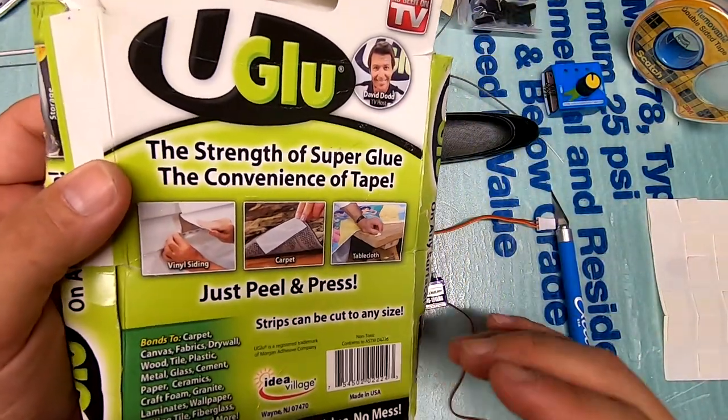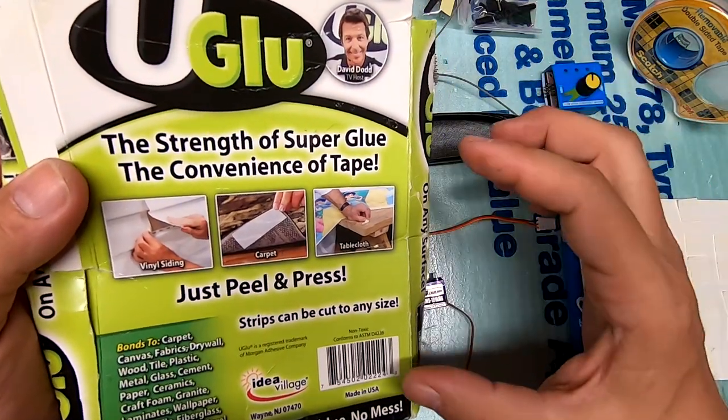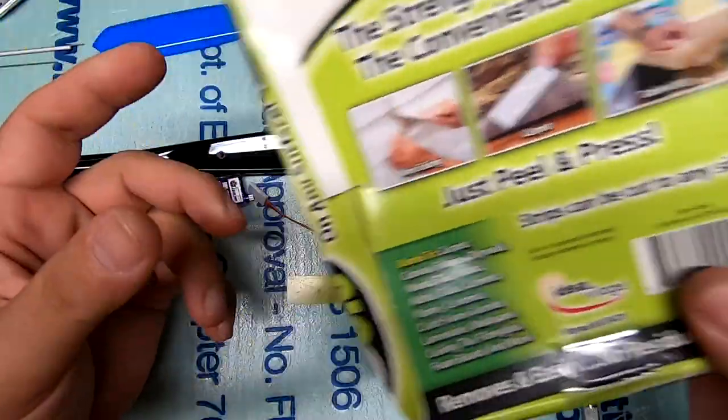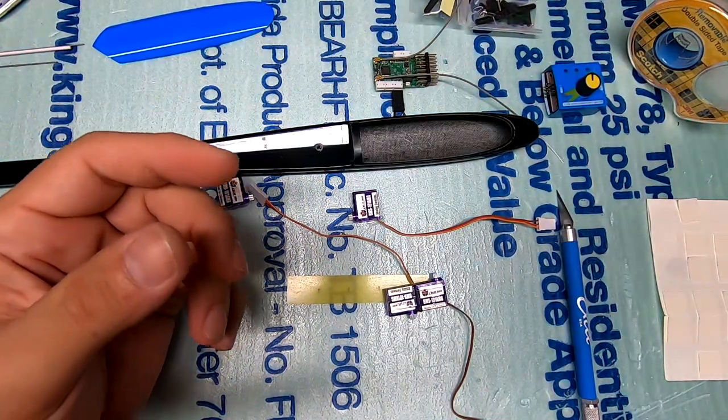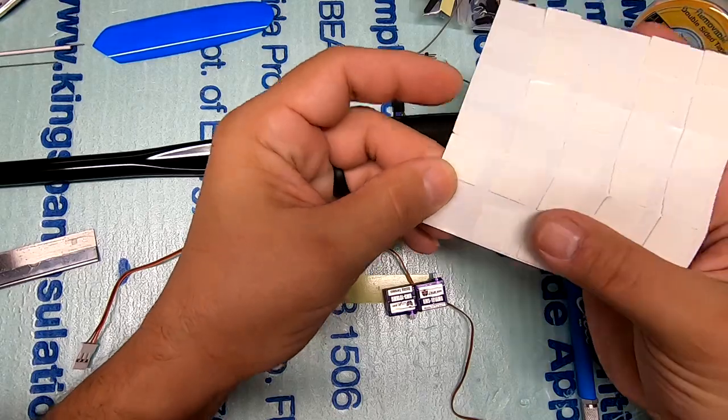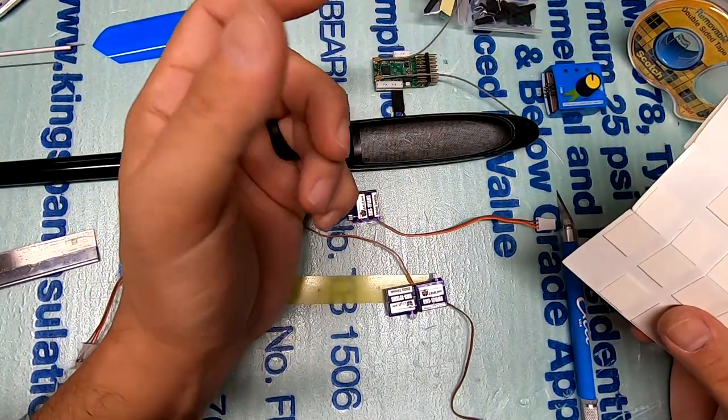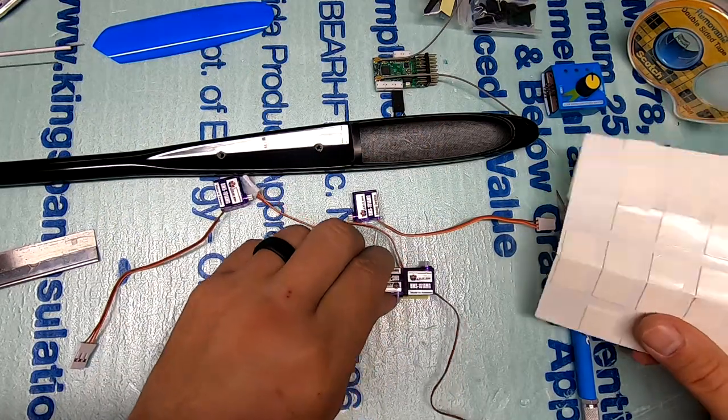It's like that sticky stuff that comes that attaches like a credit card to a piece of mail that you can just peel it up and it kind of just wads up or whatever. Anyway, you could use any kind of two-sided tape you want. I would try to use something that's thin.